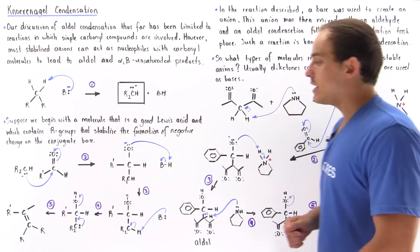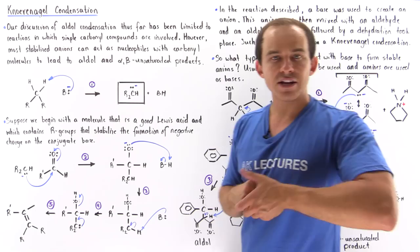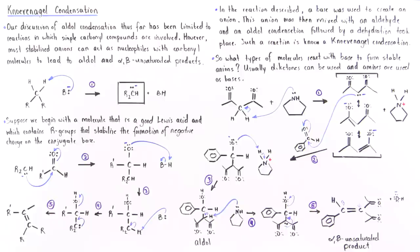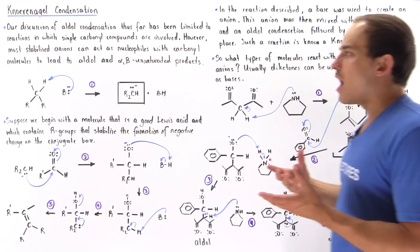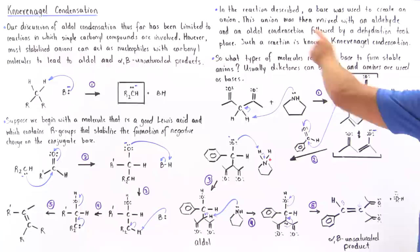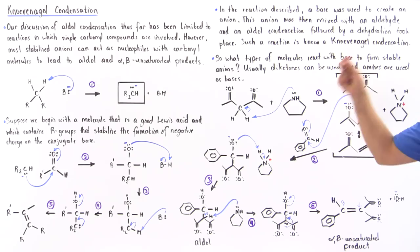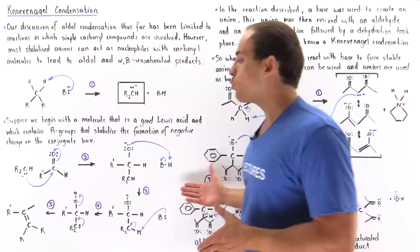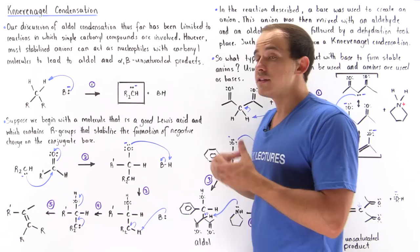So this is the general reaction mechanism of the covenangle condensation. With that said, what is the covenangle condensation? In the reaction described, we have a base that was used to create our anion. We reacted the base with this carbonyl-containing molecule to form our anion, which is our nucleophile. This anion was then mixed with an aldehyde and an aldol condensation took place, followed by a dehydration reaction. So we formed the aldol, and if the conditions are proper, we formed our alpha-beta unsaturated product. This is known as the covenangle condensation — a more complicated version of a simple aldol condensation.